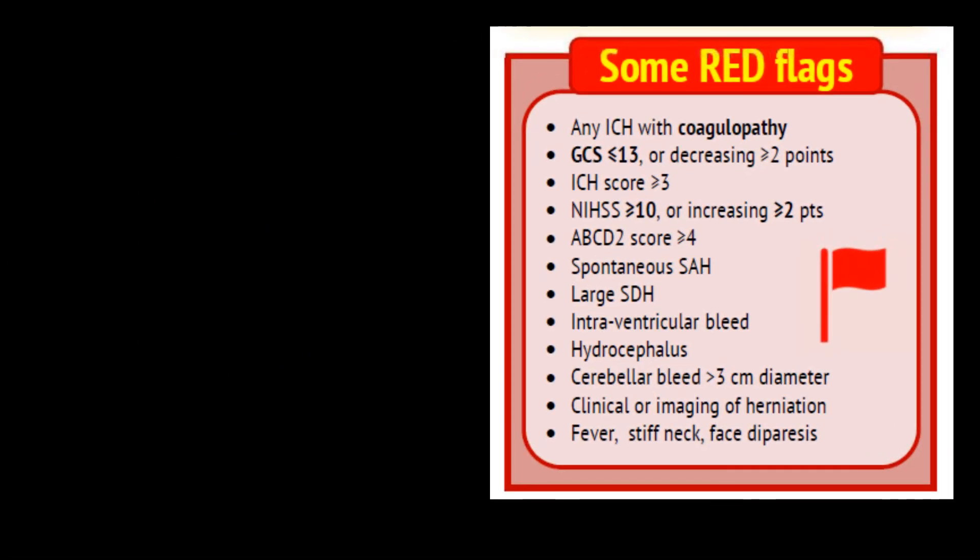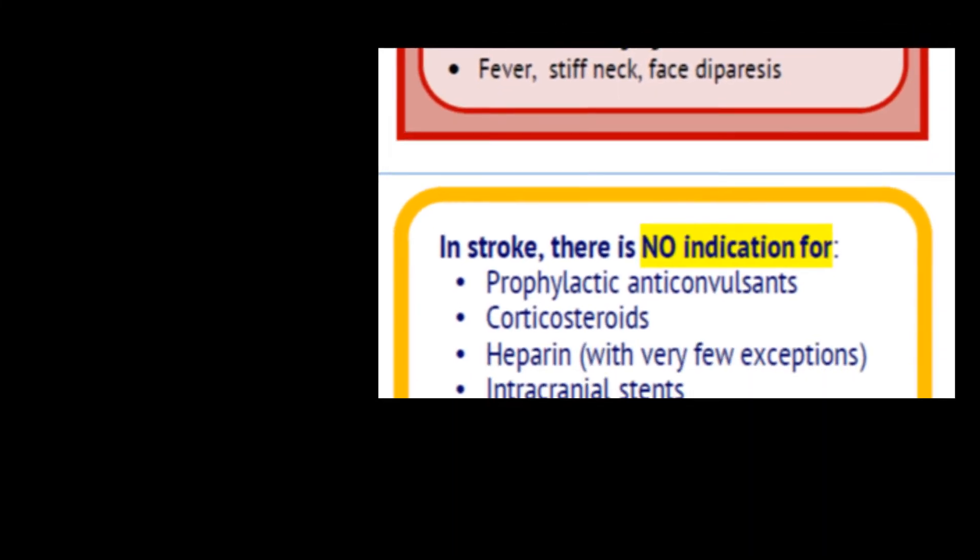Antihypertensives such as labetalol and nicardipine are commonly used. Some important red flags in acute stroke are: Glasgow Coma Score of 13 or less, or declining by more than 2 points; ICH score of 3 or greater; NIH Stroke Score of 10 or greater; ABCD2 score in TIA of 4 or greater; spontaneous subarachnoid hemorrhage (likely aneurysmal, with risk of re-bleeding); intraventricular hemorrhage; large subdural hematomas; or hemorrhage of 3 or more centimeters in diameter.